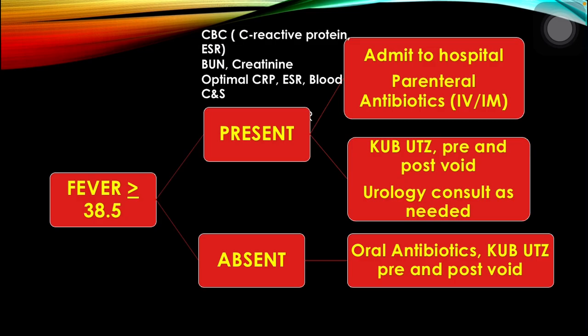In those with fever with other abnormal lab results such as CBC, CRP, BUN, creatinine, and blood culture, patients should be admitted and parenteral antibiotics via IV or IM route should be given. Ultrasound should be done and urology consult should also be arranged as needed.